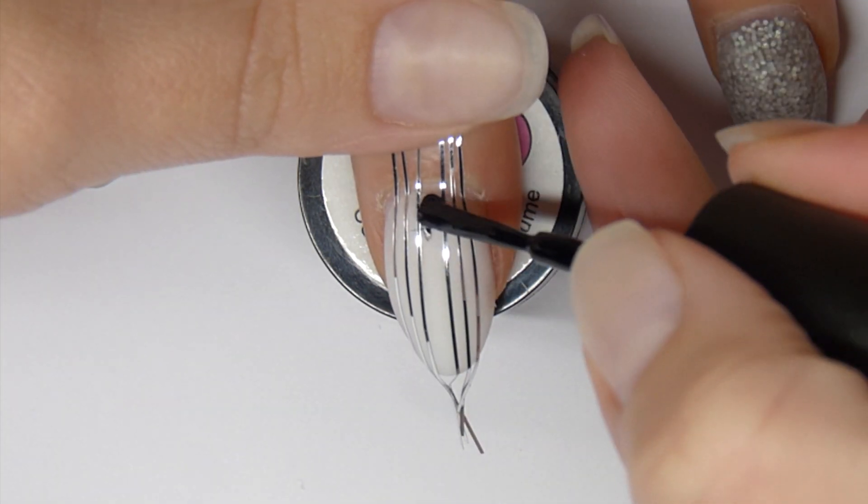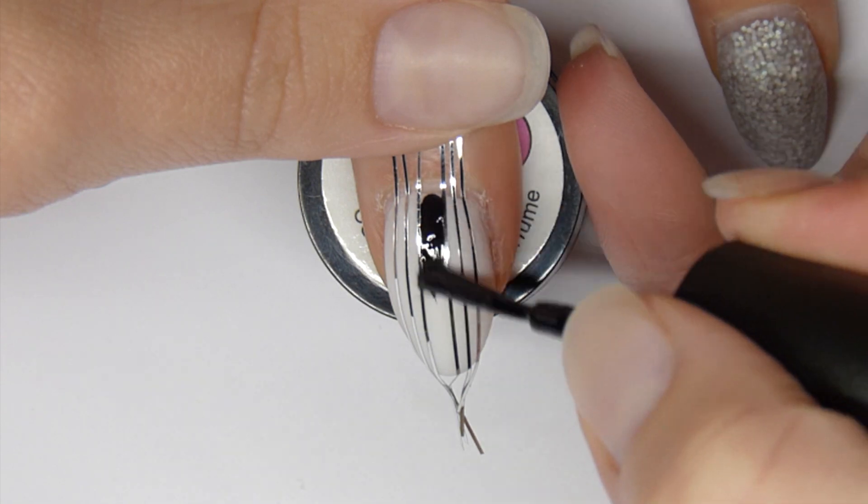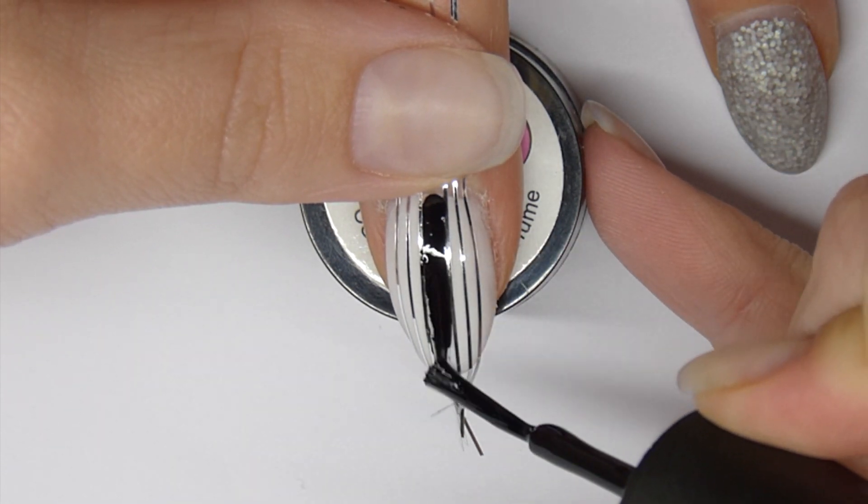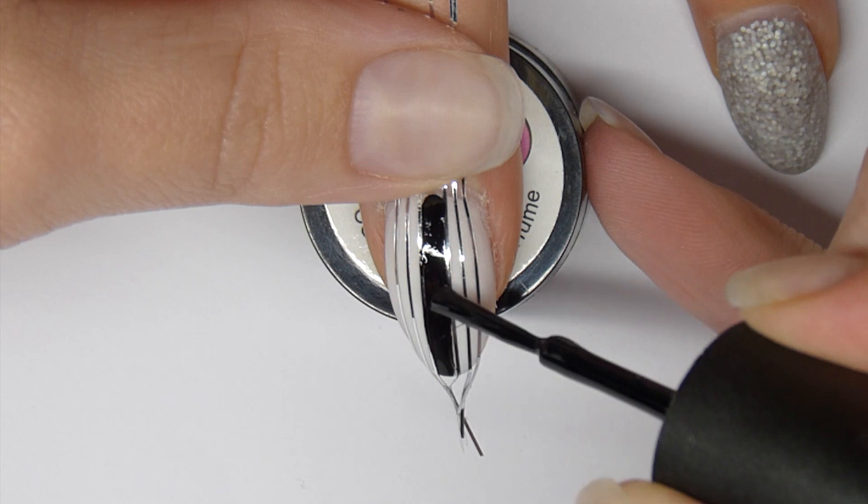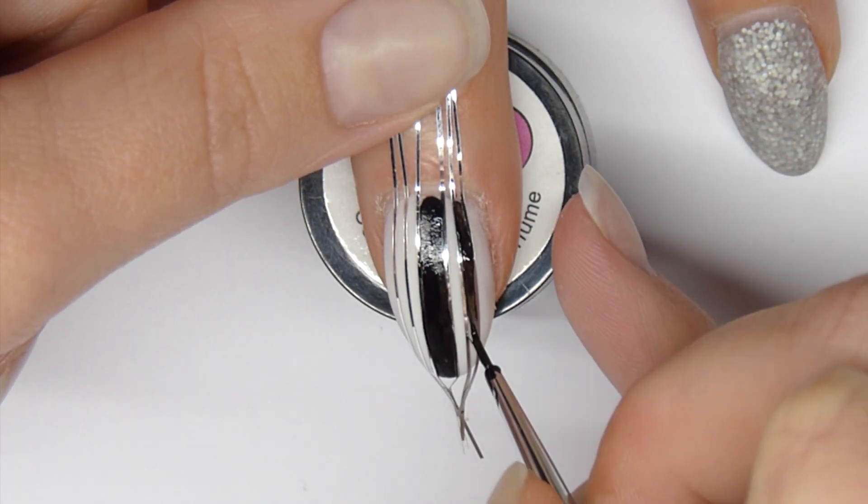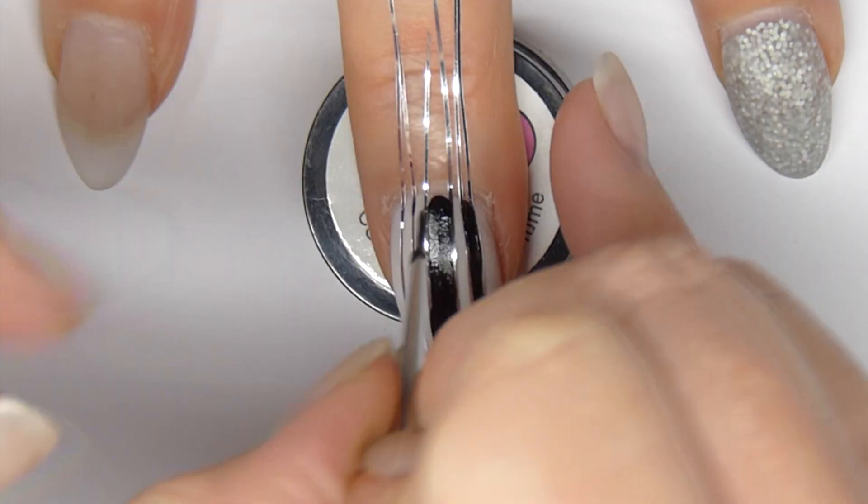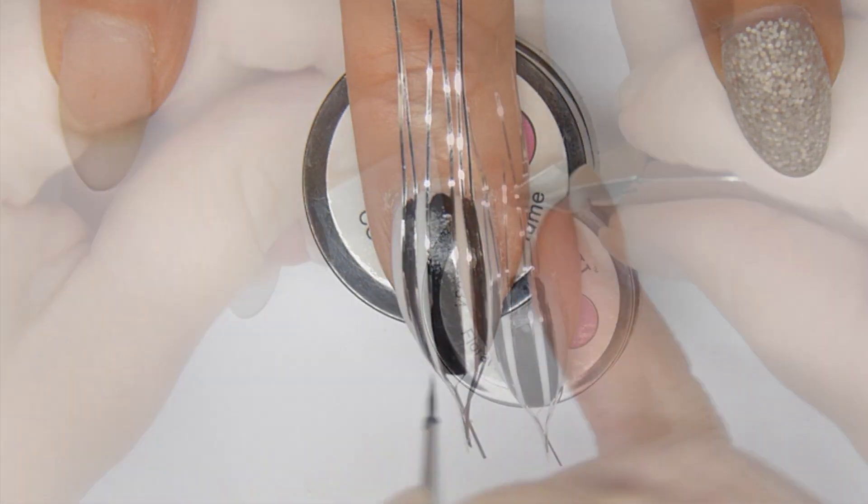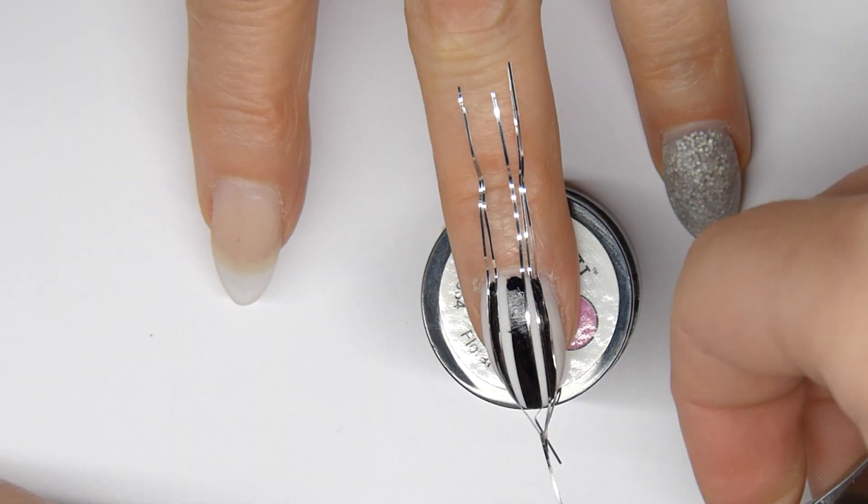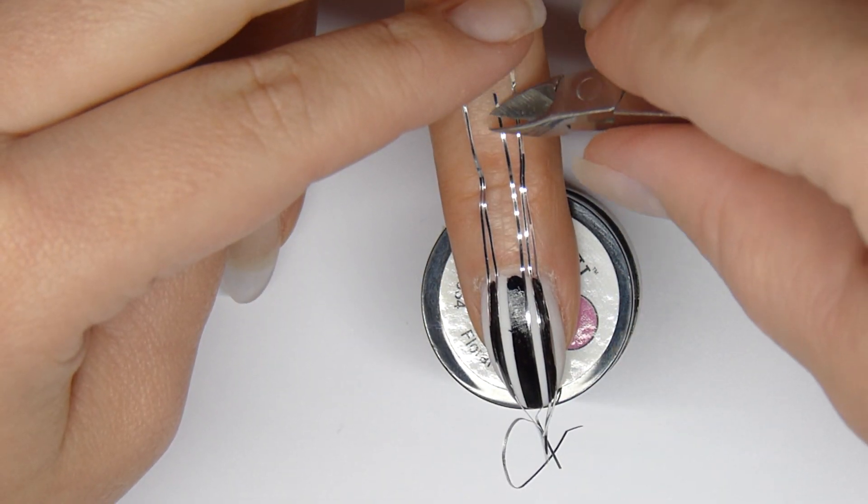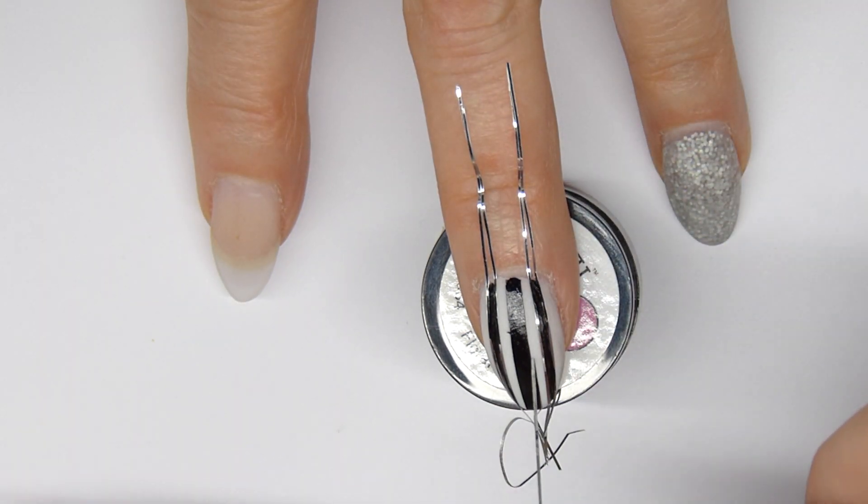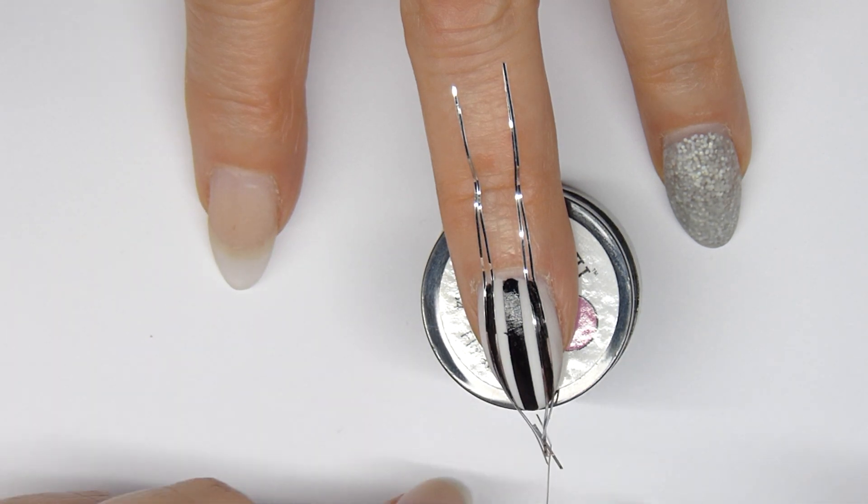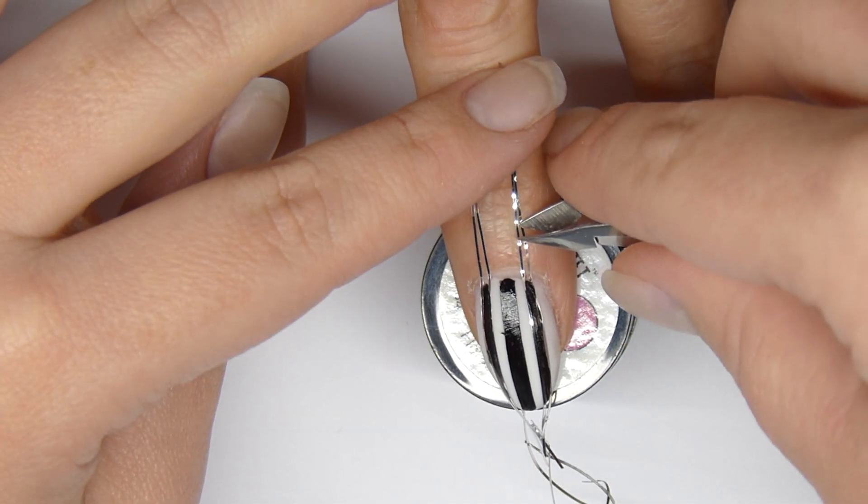For this I used China Glaze's Liquid Leather and I just painted it on in between the lines. And for the smaller areas I just used a smaller brush with the same polish. The polish doesn't have to be 100% dry when you remove the striping tape. As you can see I have a little black mark right there but you can remove that with some acetone. And yet another reason why you should use a striper, because this is some tedious work right there.